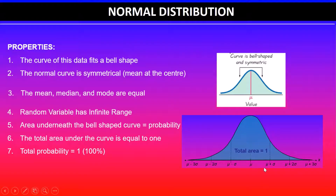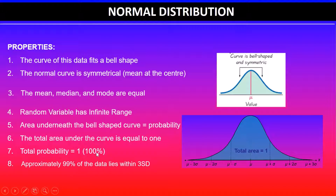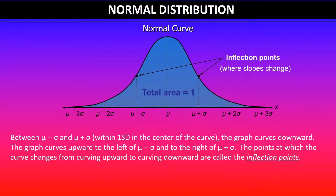On the graph you can see the mean, then mean plus one standard deviation, mean plus two standard deviations, and mean plus three standard deviations on the right-hand side. Likewise, we have mean minus one, two, and three standard deviations on the left-hand side. Approximately 99% of the data lies within three standard deviations of the mean. You also need to know that within the first standard deviation you will see the points of inflection, where the slopes change. If given a graph, you can identify the point of inflection to estimate the standard deviation.